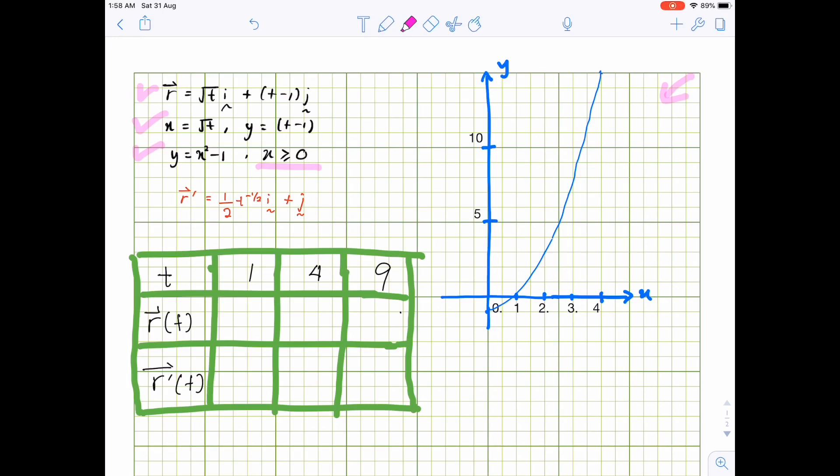So now I want to show you what is position vector, tangent vector, as well as tangent line. We choose several points of t which is 1, 4, and 9.